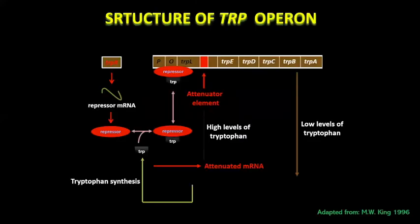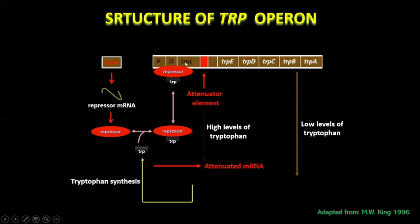Moving on, we will discuss the structure of the tryptophan operon. This operon encodes five enzymes in the biosynthesis pathway leading to the synthesis of tryptophan, and these genes are EDCBA. Apart from promoter and operator – which was only the case in the lactose operon – the tryptophan operon also has a short stretch of leader sequence, TRPL, adjacent to the operator. This leader sequence is required for attenuation, which will be discussed in upcoming slides.